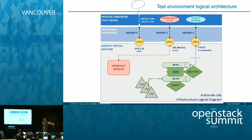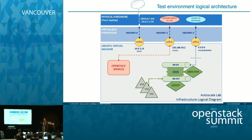For SSH access: if you're using the image, connect with username 'vagrant' and password 'stack'. If you built from Vagrant you can do 'vagrant ssh', but if you're using the image just connect with vagrant and stack.